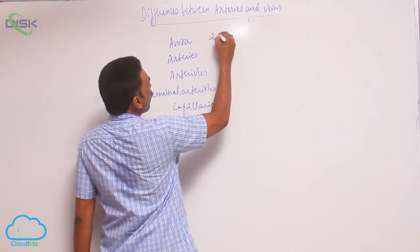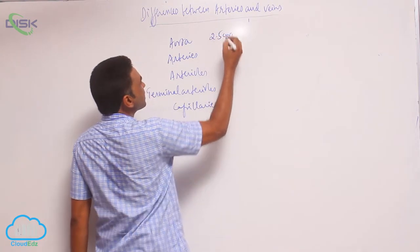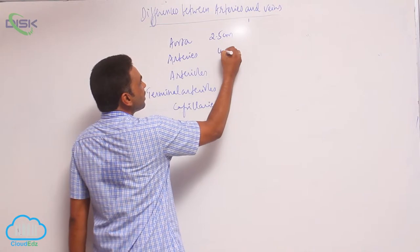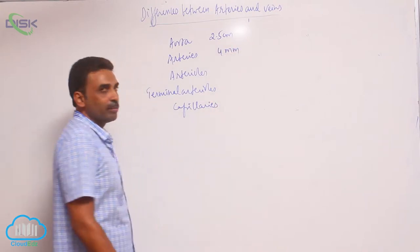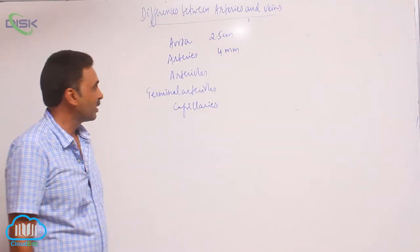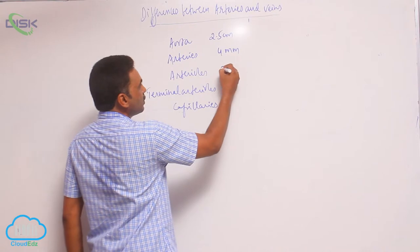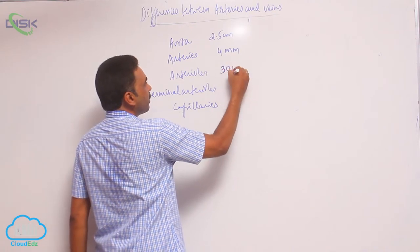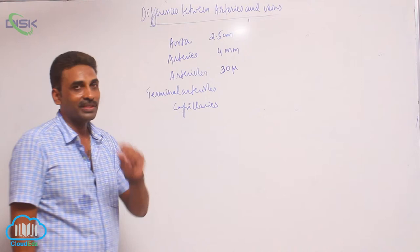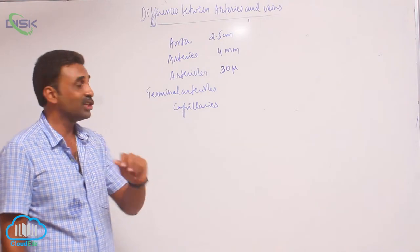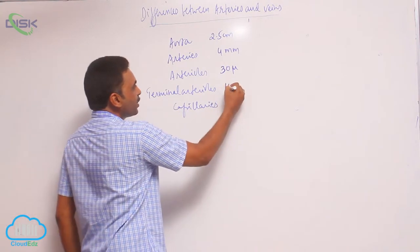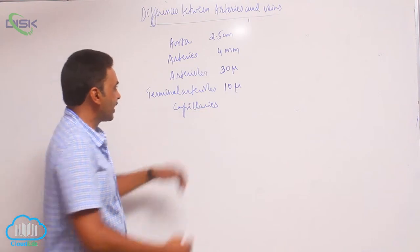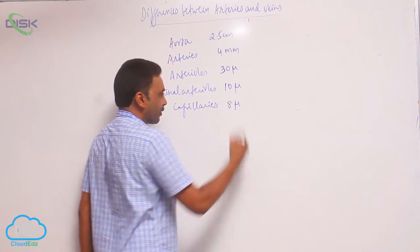The aorta is around 2.5 centimeters in diameter. Each artery is around 4 millimeters in diameter. When you come to the arterioles, they are around 30 microns in diameter — those are the initial arterioles. The terminal arterioles are around 10 microns, and the capillaries are around 8 microns.